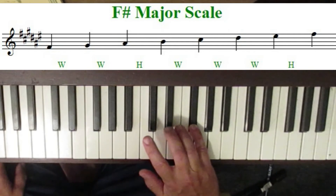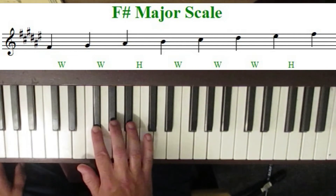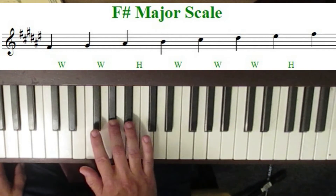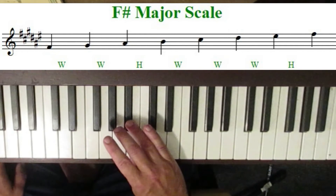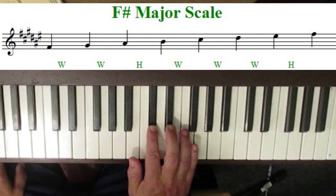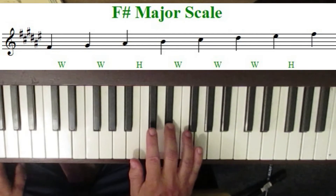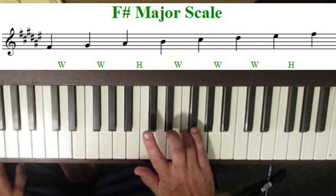So the major scale goes: F sharp, whole step to G sharp, whole step to A sharp, half-step to B, whole step to C sharp, whole step to D sharp, whole step to E sharp, and a half-step up to the F sharp.